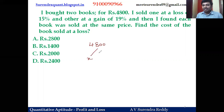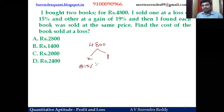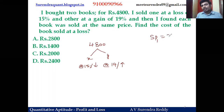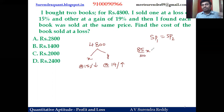Let the cost of the first book be x and the second book be y. The first is selling at 15 percent loss, so its selling price is 85 percent of x. The other is selling at 19 percent gain, so its selling price is 119 percent of y.